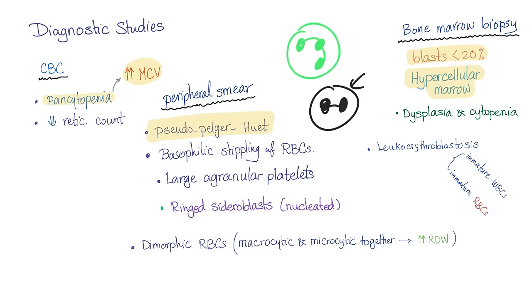Why not CLL? CLL can occur in the elderly and can have anemia and thrombocytopenia — however, in CLL, white blood cells will never be low because it is leukemia. The next question: the patient is at risk of developing AML, not ALL, CML, or CLL. The answer is AML — MDS can progress into AML because dysplasia is precancerous.